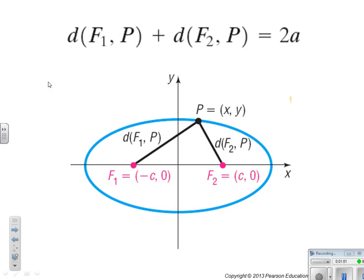We're going to look at ellipse information when centered at the origin. The distance from F1 to P plus the distance from P to F2 equals 2A, where A comes from our formula. Focus 1 is at negative C, 0; C is the distance from the origin to the focus. F2 is at C, 0.